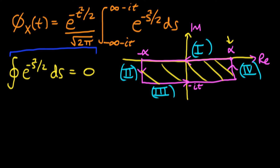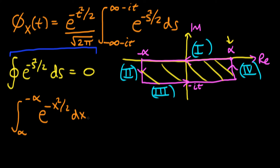We can evaluate this contour integral by thinking about each component in turn. The first component is the integral starting from α going to minus α, and since we're integrating along the real axis, s has no imaginary component, so it's just e^(−x²/2) dx, where x is a real number.